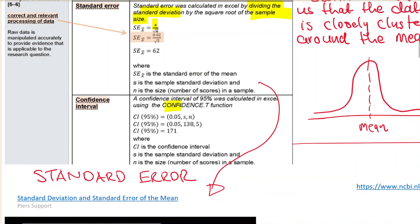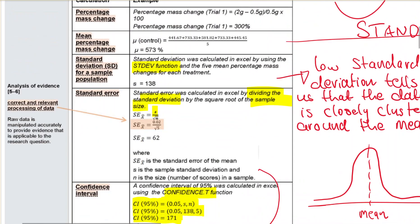For confidence interval, just say it was calculated in Excel using the CONFIDENCE.T function. You can put this in - this is exactly what I've put in as the formula in the Excel sheet I'll show you. That's an example of the values used, like standard deviation of 138 and sample size of 5. There's no math involved - it'll all happen in Excel.